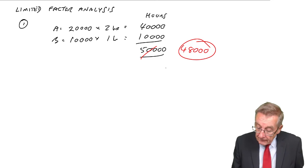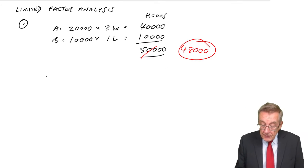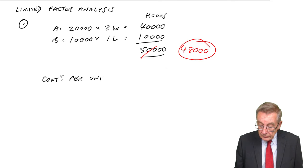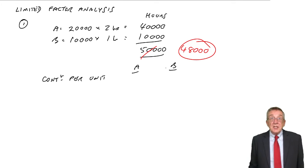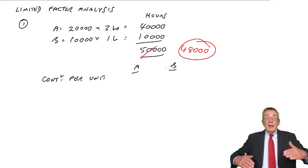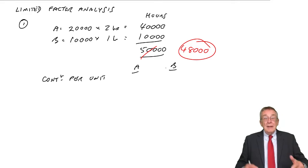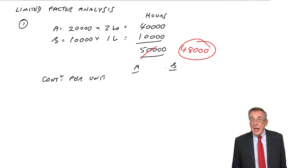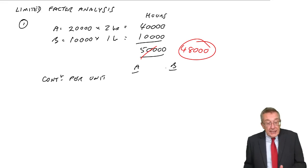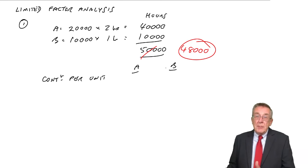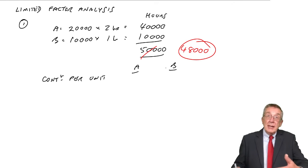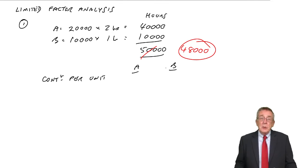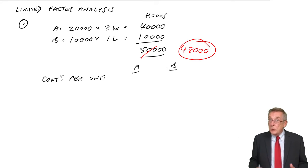What are we going to do? We obviously can't produce to meet demand, but how many of A's shall I produce? How many B's? Given that I want maximum profit, but we can't use more than 48,000 hours. What we do is first look at the contributions per unit. Remember, since we're going to produce less than we were hoping to, if you produce more or less of a product, total fixed costs will stay unchanged. What will change is the contribution.